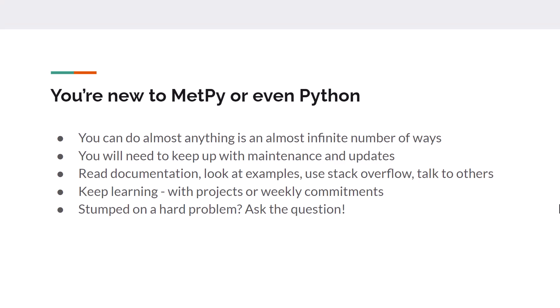A few key points if you're new to MetPy or new to Python in general. The first is one that's very frustrating to a lot of new people: you can do almost anything, and you can do that in an almost infinite number of ways. There will be a lot of opinions from different programmers on which way is best. At the end of the day, if it accomplishes your goal, it's fine. It may be able to be optimized or made more elegant, but as a researcher your primary job is not software engineer — it's researcher.